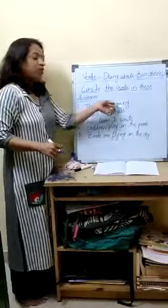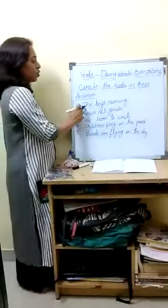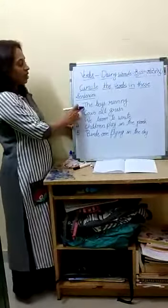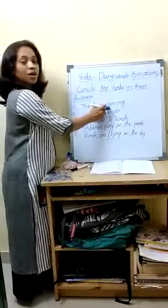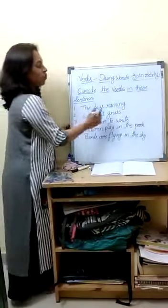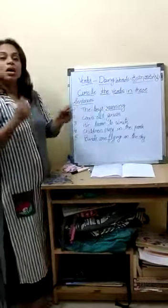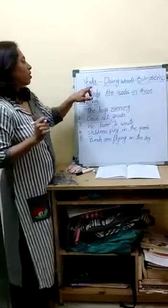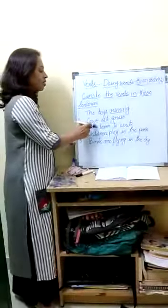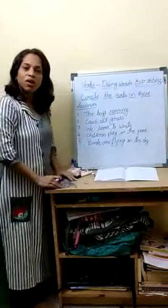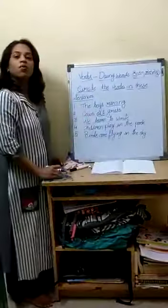Now one by one we will circle the verbs. First sentence — The boys running. Which word is the verb? Running is the verb. What are the boys doing? They are running. Next: Cows eat grass — what are the cows doing? They are eating grass, so 'eat' is the verb.